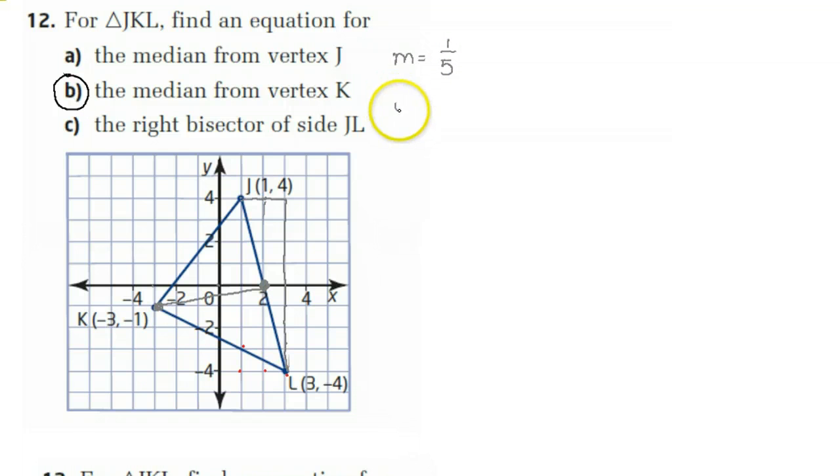So if I know that the slope is 1 over 5, I know that Y is equal to 1 over 5X plus B. And I'm going to sub. It doesn't matter which point I sub into here. I can sub either negative 3, negative 1, or 2, 0. So let's sub 2, 0 into this. So I get 0 is equal to 1 over 5 times 2 plus B. So with a little algebra you get B is negative 2 over 5. So therefore the equation of the median from vertex K is 1 over 5X minus 2 over 5.